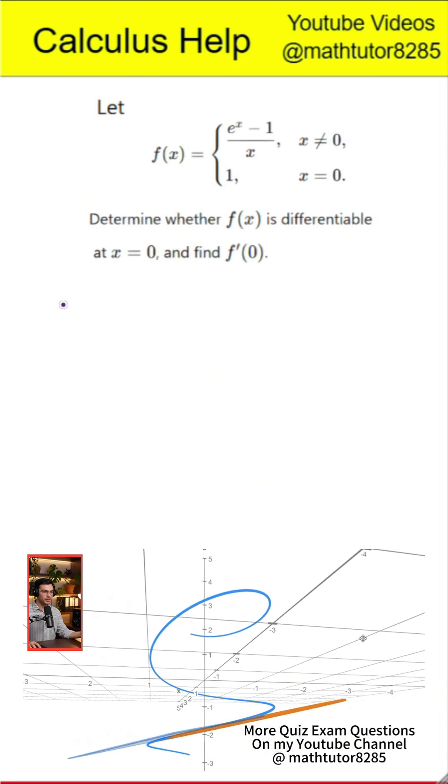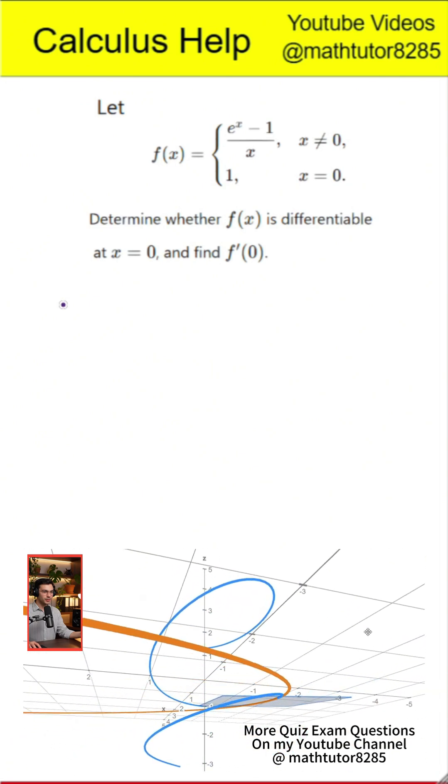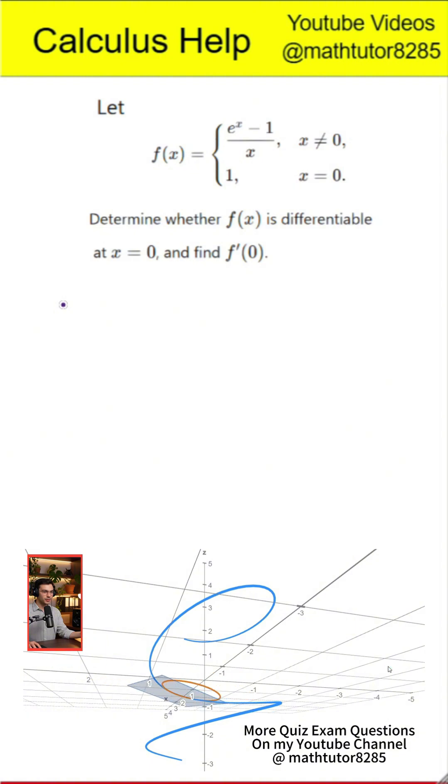Let the function f of x be defined as follows. When x is not equal to 0, f of x equals the quantity e to the power of x minus 1 divided by x. When x equals 0, f of x equals 1. Determine whether f of x is differentiable at x equals 0 and find the value of f prime of 0.